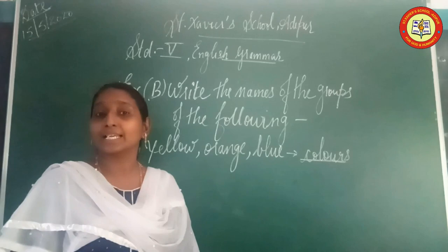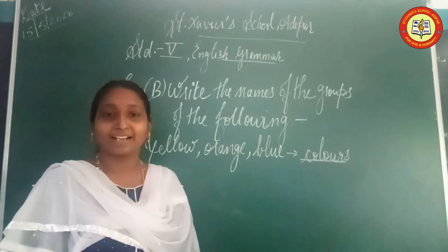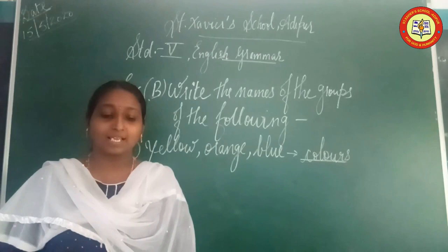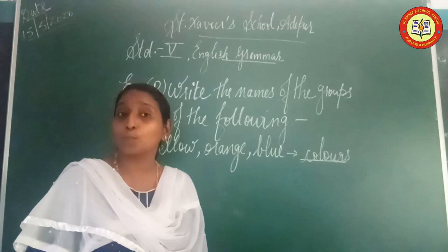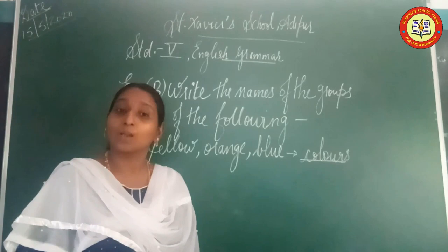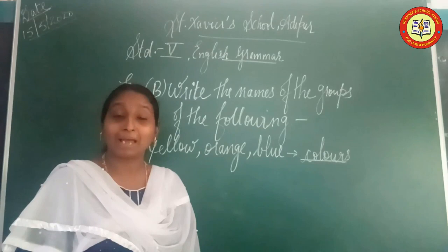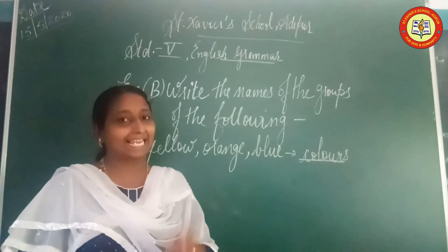Fourth: Tea, Cold Drink, Coffee — group of Beverages. Fifth: Ganga, Yamuna, Tripti — group of Rivers. Sixth: Table, Chair, Bed — group of Furniture. Seventh: Tokyo, Mumbai, Los Angeles — group of Cities. Eighth: Mango, Banana, Watermelon — group of Fruits.